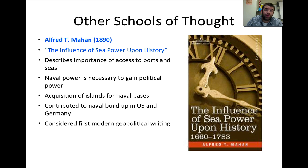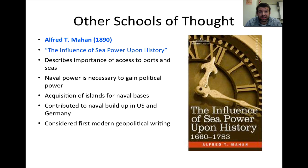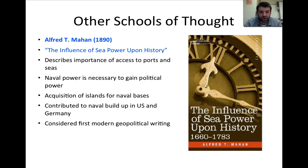Yet another school of thought came from Alfred Mahan, whose work is considered one of the first geopolitical texts in the field. In contrast to Mackinder's Heartland Theory, Mahan argued that it wasn't control of land but control of the sea that mattered most. Having control of the seas, ports, and a strong navy was essential to geopolitical influence. Mahan's theories were ultimately used by both the Germans and the United States in building their navies heading into the 20th century and World War II.